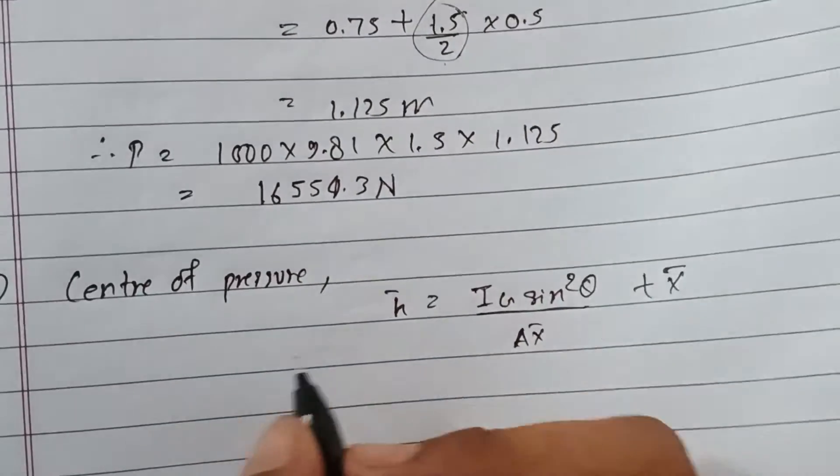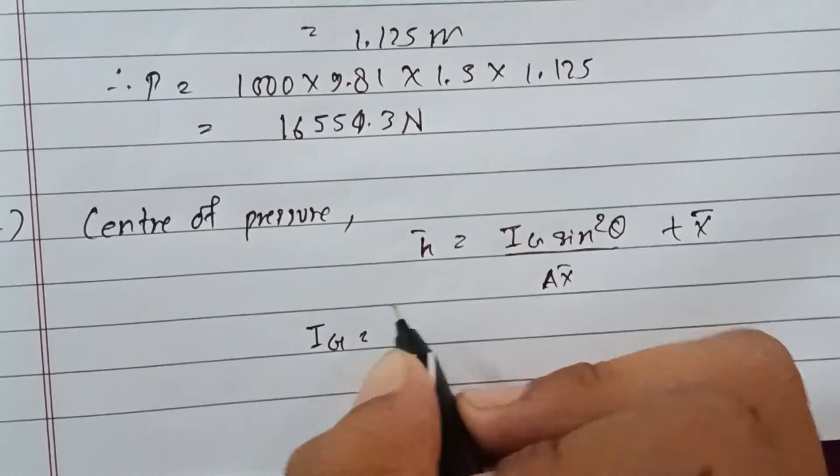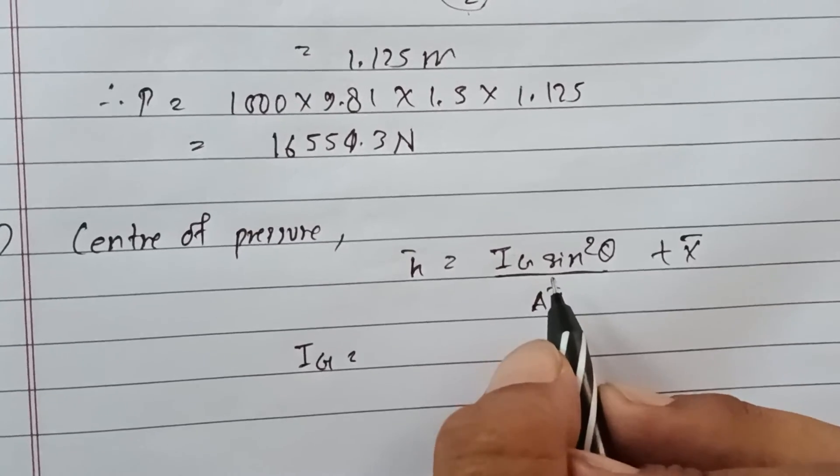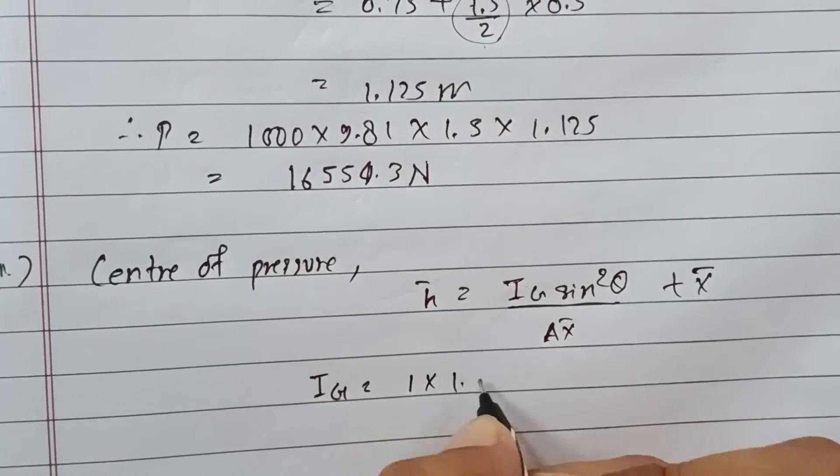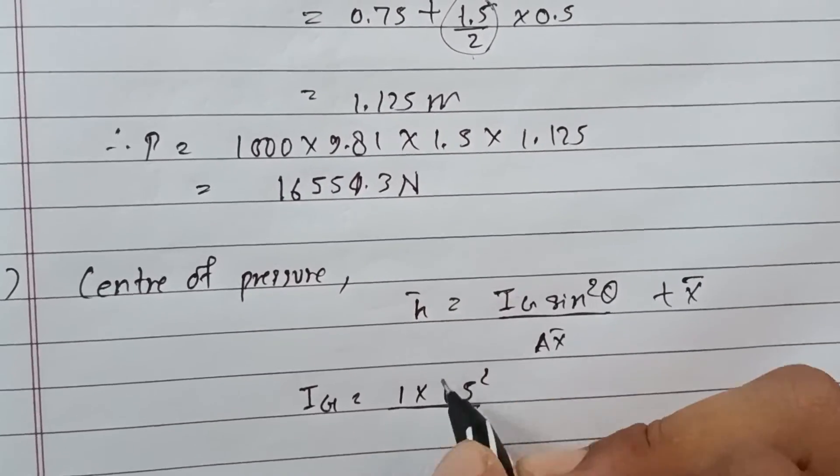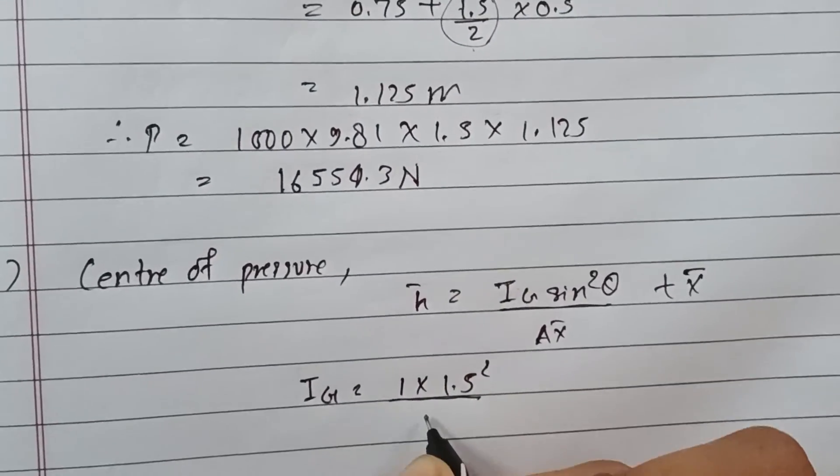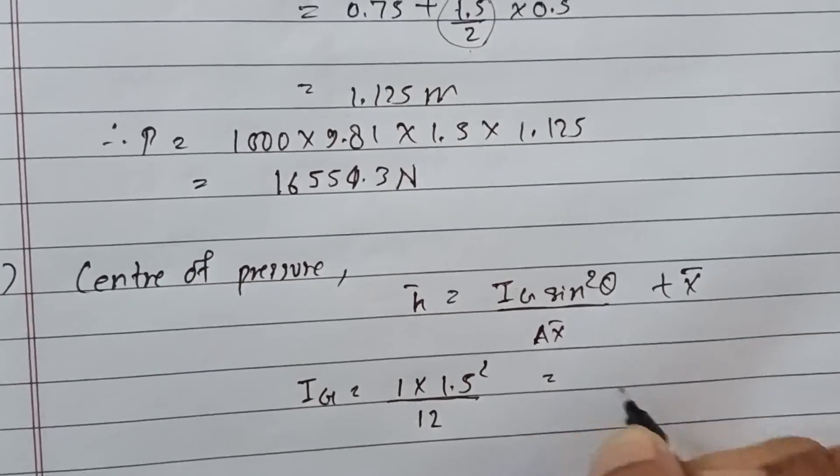For a rectangular section, I_G equals b d cubed by 12. For our case, that's 1 times 1.5 squared. After calculation, being a rectangular section, I_G equals 0.281 meter to the power 4.